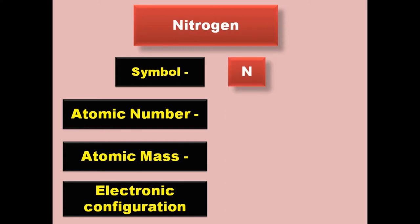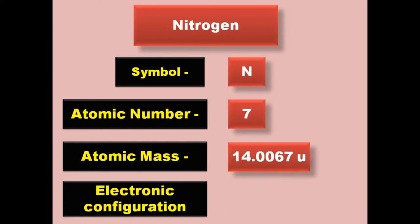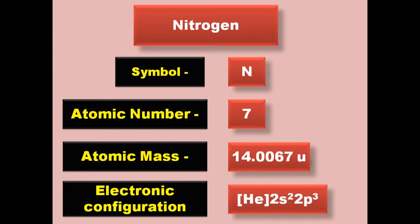Nitrogen has symbol N, atomic number 7, atomic mass 14.0067, electronic configuration [He] 2s2. Nitrogen exists in gaseous form at room temperature.